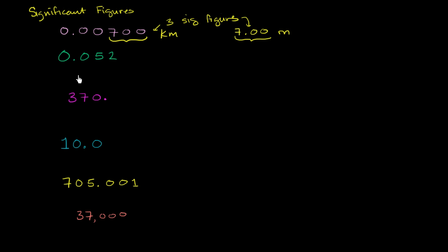Let's do the next one. So based on the same idea, we have the 5 and the 2. The non-zero digits are going to be significant figures. You don't include this leading zero by the same logic that if this was 0.052 kilometers, this would be the same thing as 52 meters, which clearly only has two significant figures.